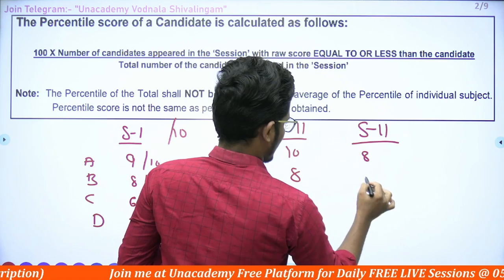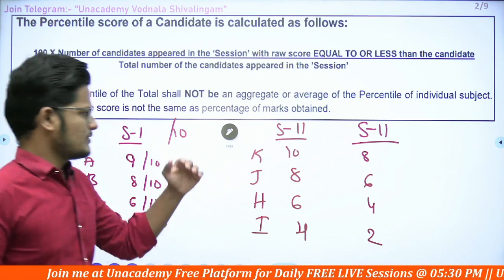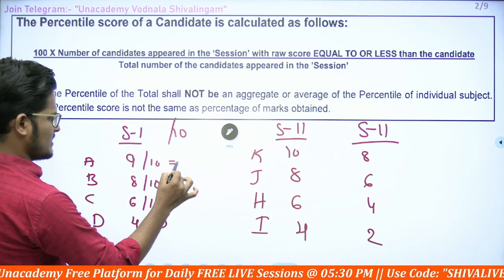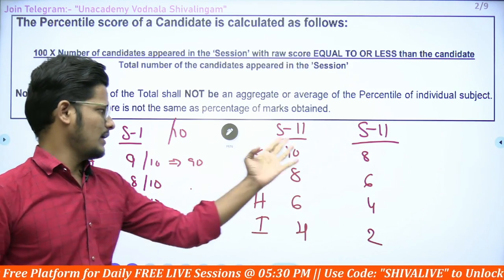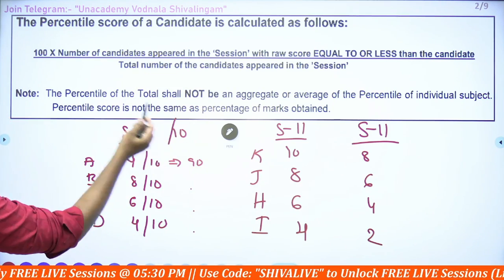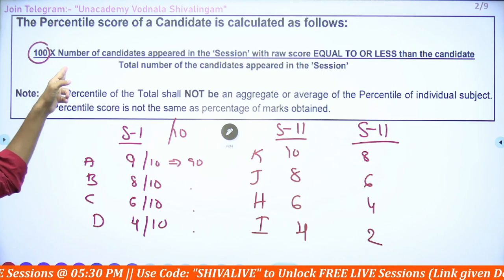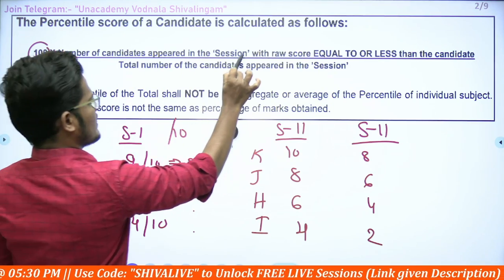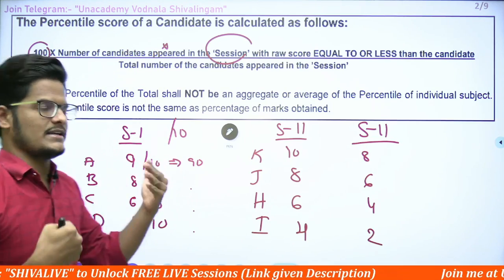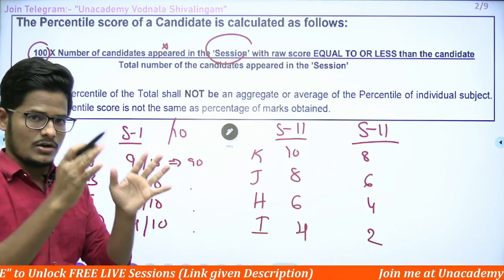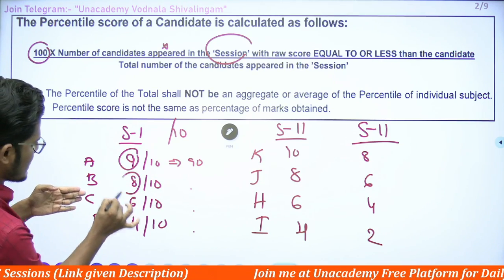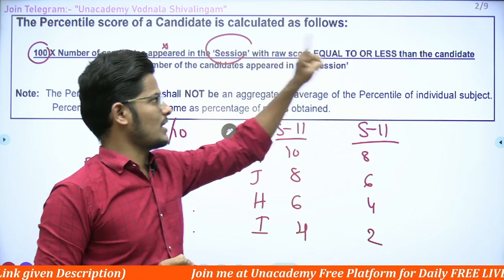Different results are coming for three different shifts. This will cause discrimination if you calculate the percentage — you'd get 90%, 80%, 60%, 40% and 100%, 80%, 60% — so that will not give the best result. That's why percentile is calculated. The formula is: 100 multiplied by the total number of candidates who appeared in that session with a raw score equal to or less than the candidate's score, divided by the total number of candidates appeared in that session. Raw score means whatever score the candidate actually got.